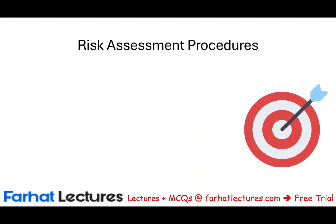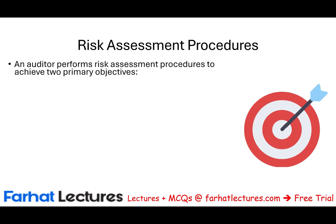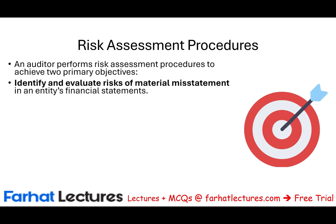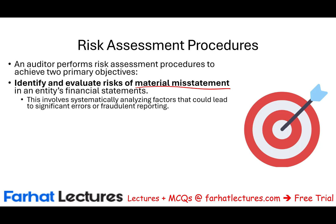The risk assessment procedures — we conduct risk assessment for two primary audit objectives. One is to identify and evaluate the risk of material misstatement in an entity's financial statements. This means we analyze factors that could lead to significant errors or fraudulent reporting. We need to identify those risks before we start, because if we identify them, we can allocate the proper resources, study the controls, and conduct the proper testing.